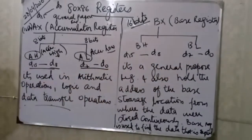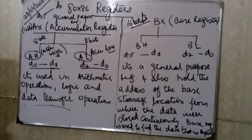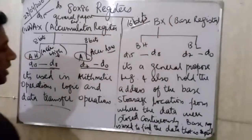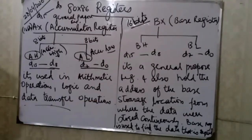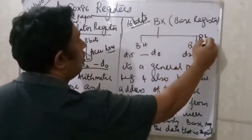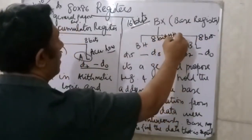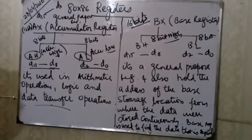BX is the base register. It is used to hold the address of the base storage location from where data is stored continuously. The base register is used to find the data that is required. BH is the high 8 bits and BL is the low 8 bits. BX is a general-purpose register that holds the address of the base storage location.